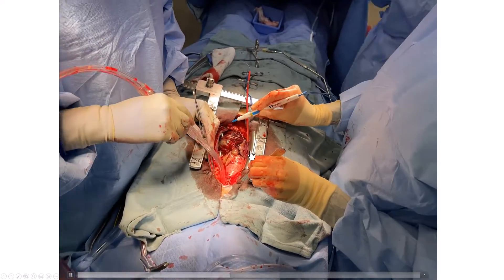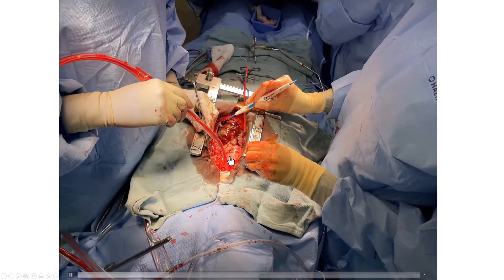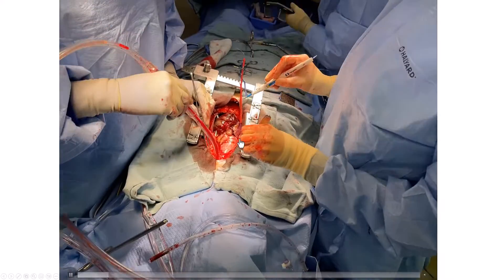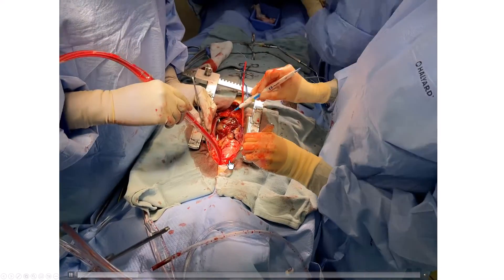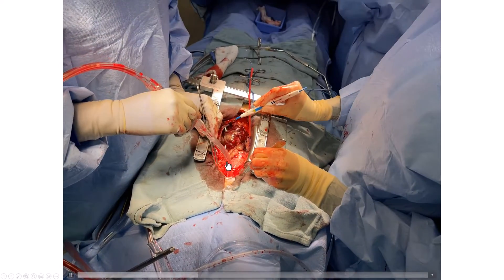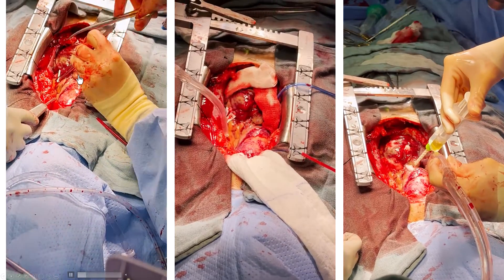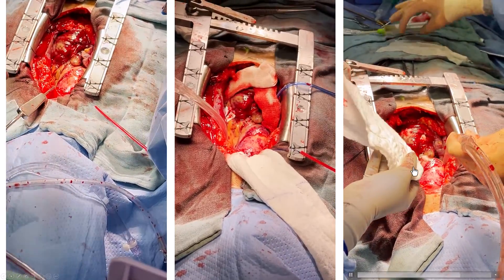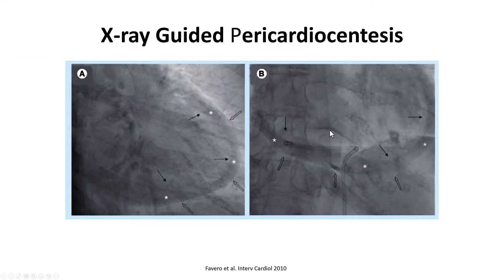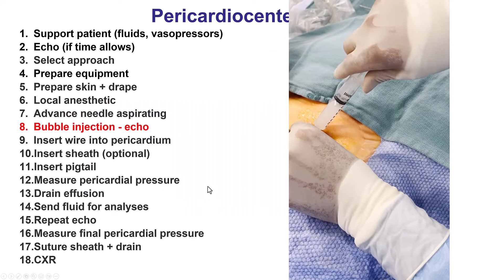If there is no time to obtain echo, contrast injected into the pericardium can serve as a marker of the pericardial space, allowing the needle to be advanced into that space. Otherwise, the administration of bubbles under echocardiographic guidance is the key confirmatory step.